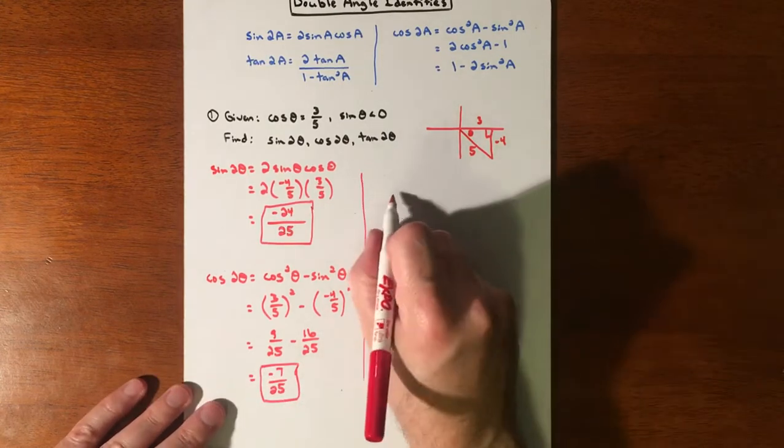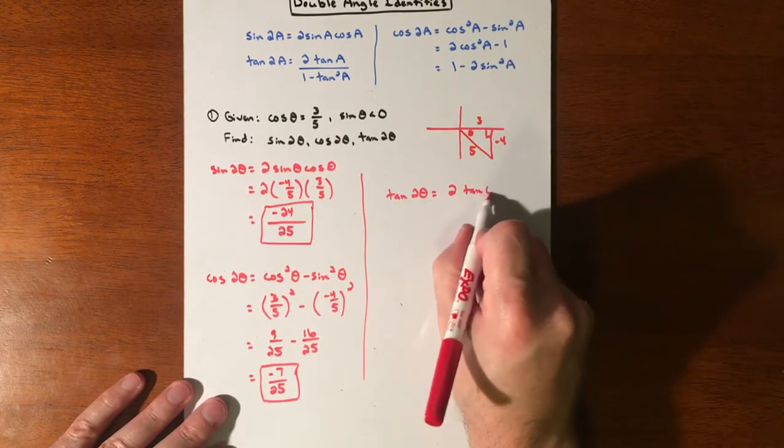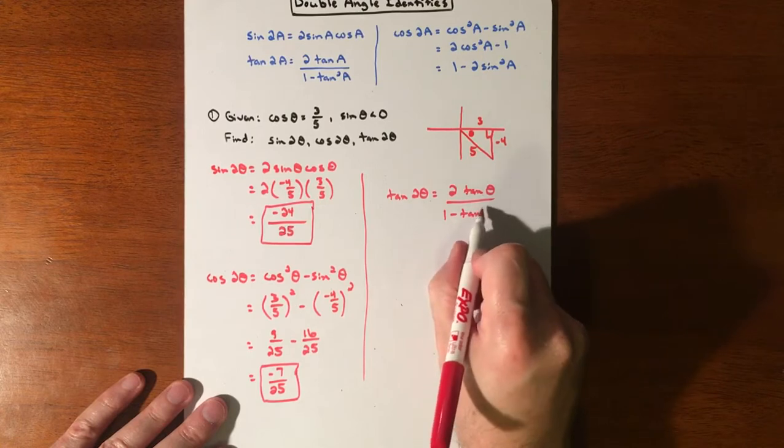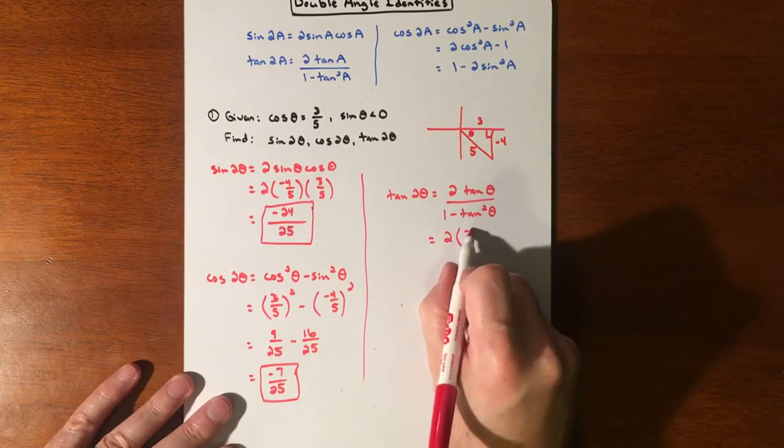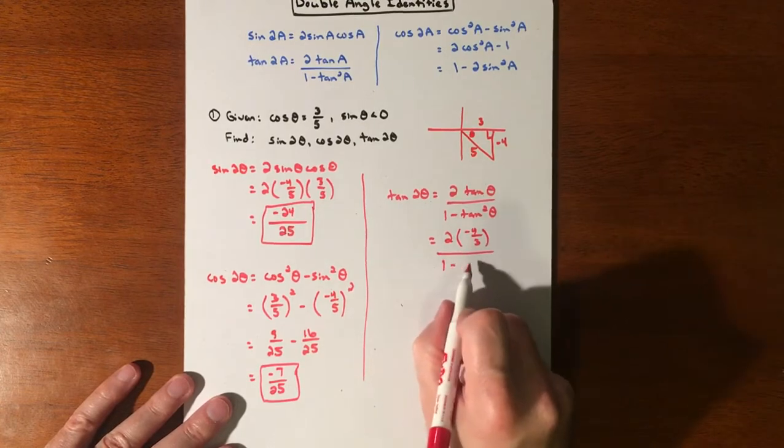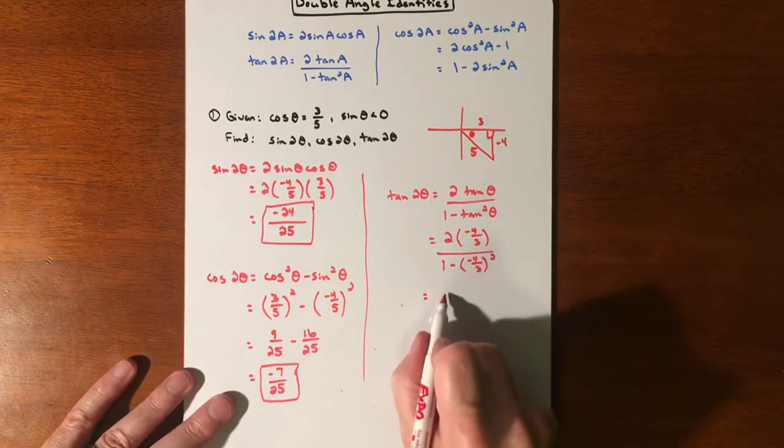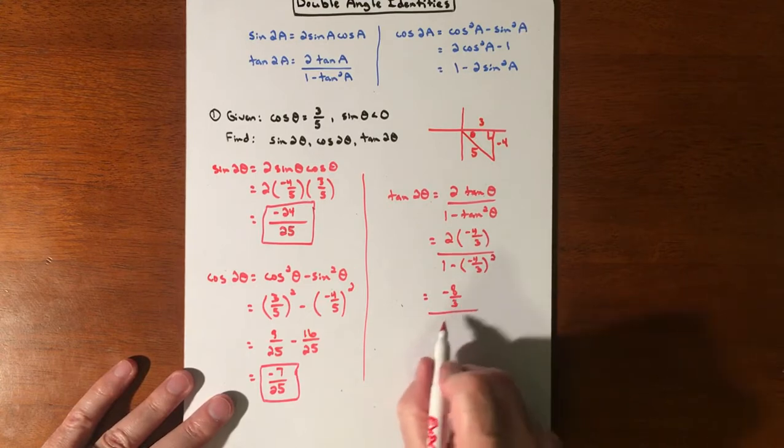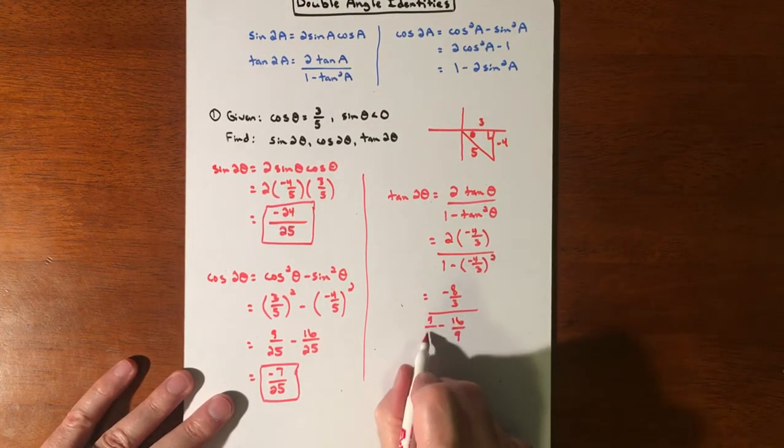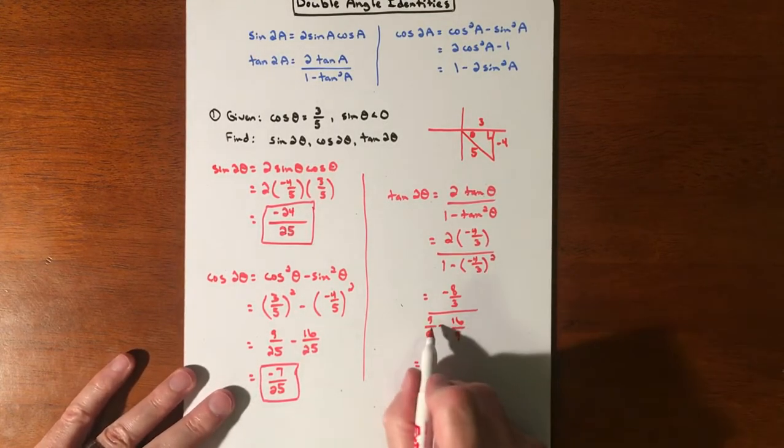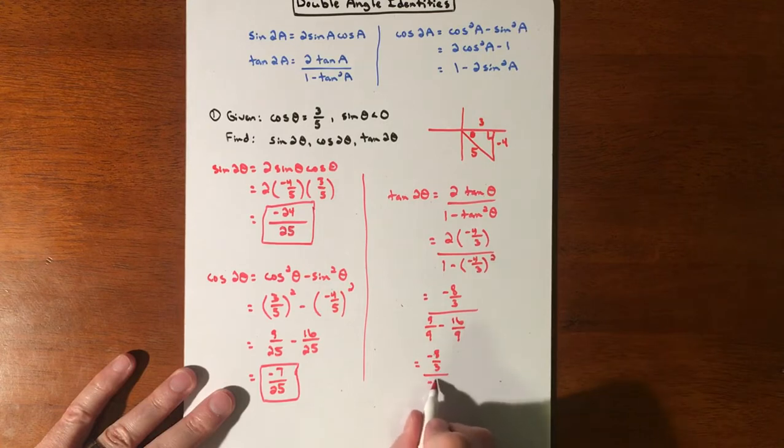All right, and then we'll do tangent. Tangent of 2θ is 2tan(θ)/(1-tan²(θ)). Tangent of θ is -4/3, so it's going to equal 2 times -4/3 over 1 minus (-4/3)². That's going to be -8/3 divided by, this is going to be 16/9, so minus 16/9.